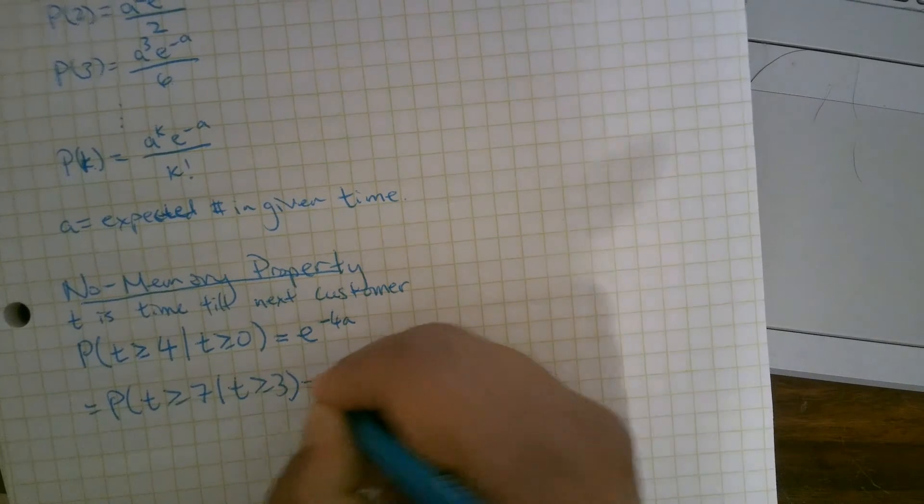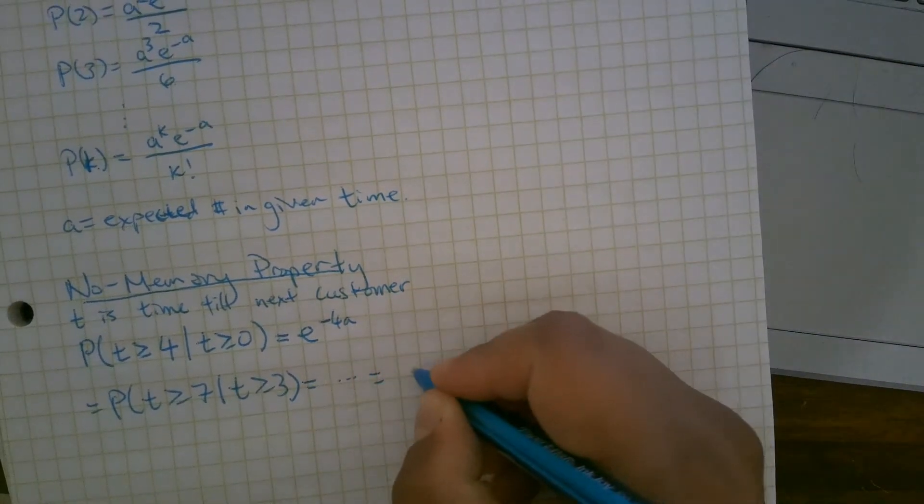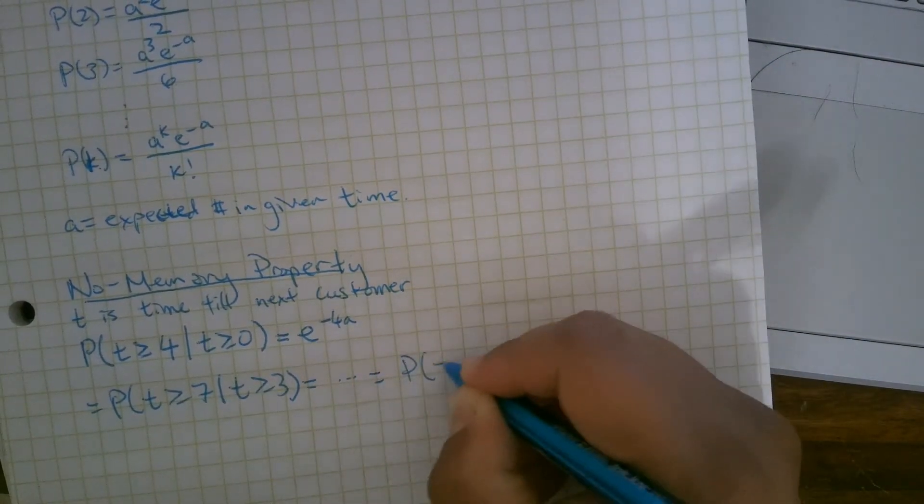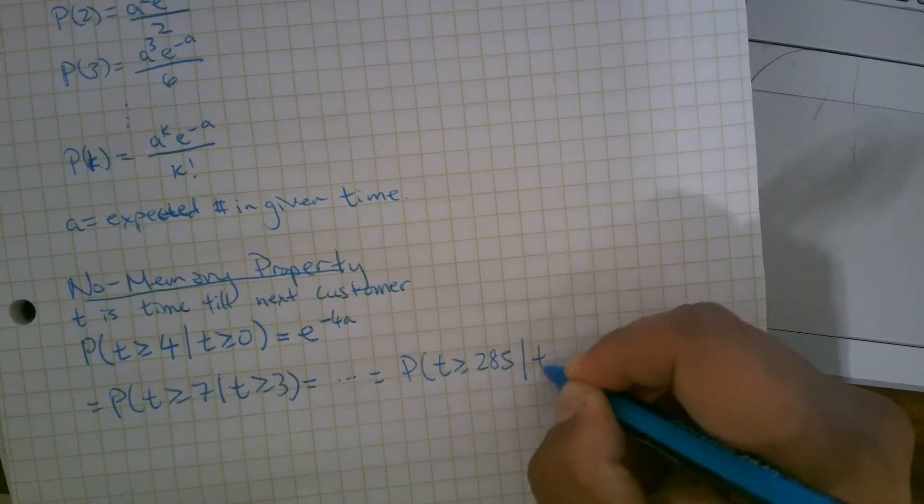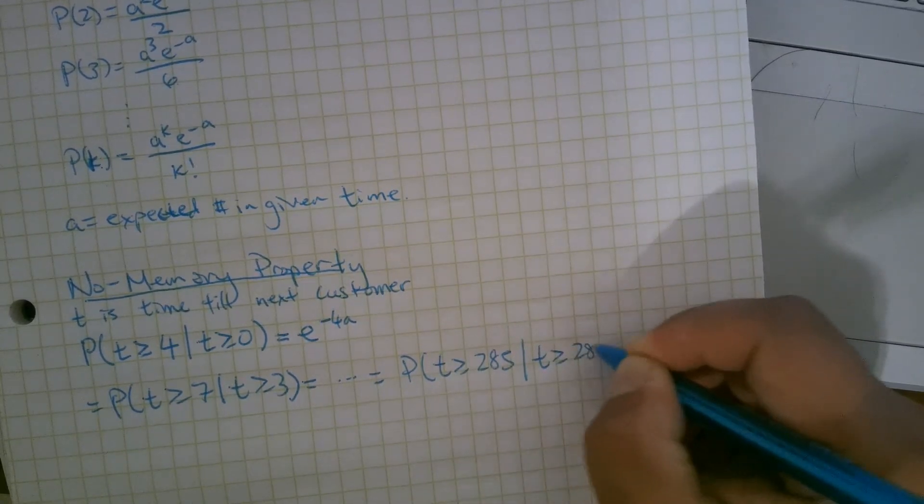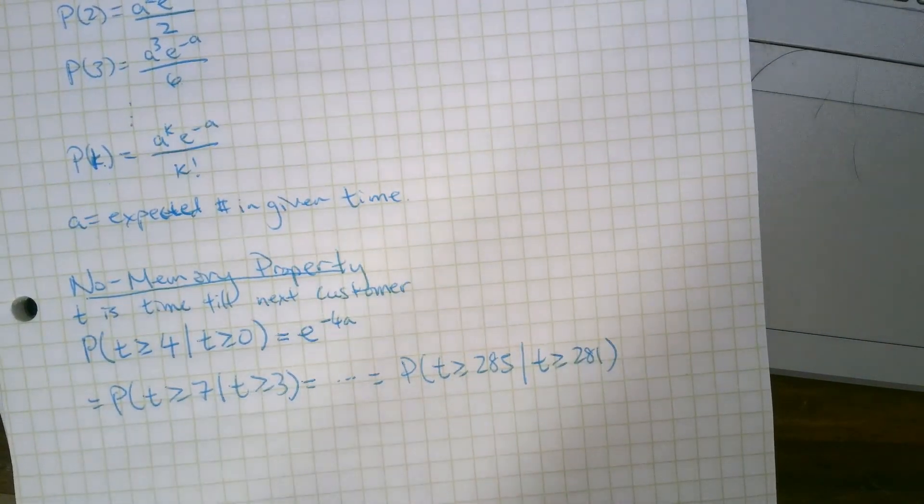And it doesn't matter. We can go, you know, that's the same as the probability T is greater than or equal to 285, given that T is greater than or equal to 281. As long as that difference is 4, all these probabilities are the same.